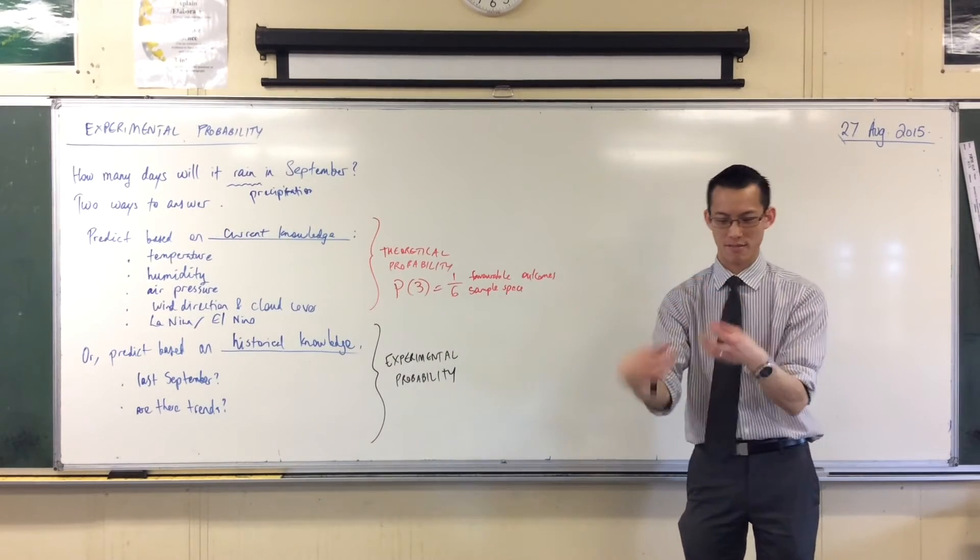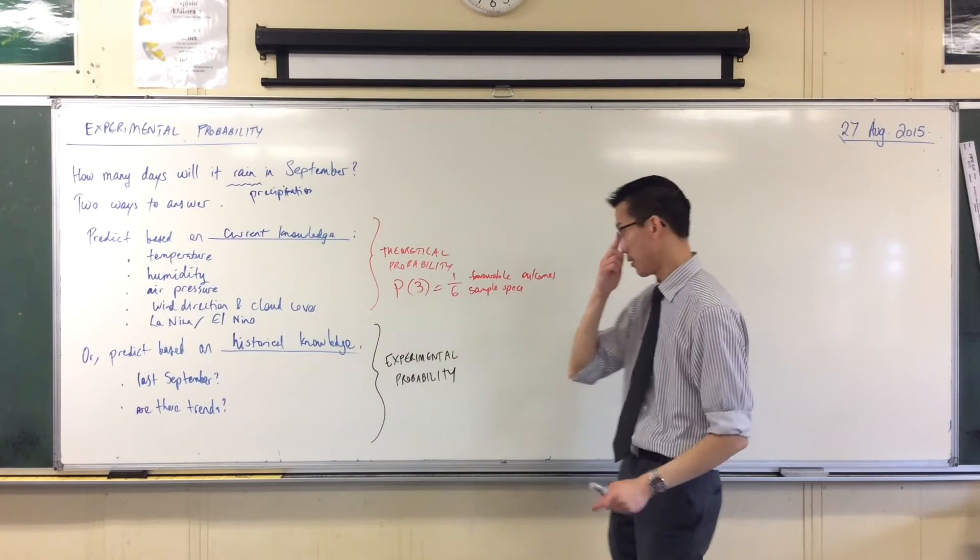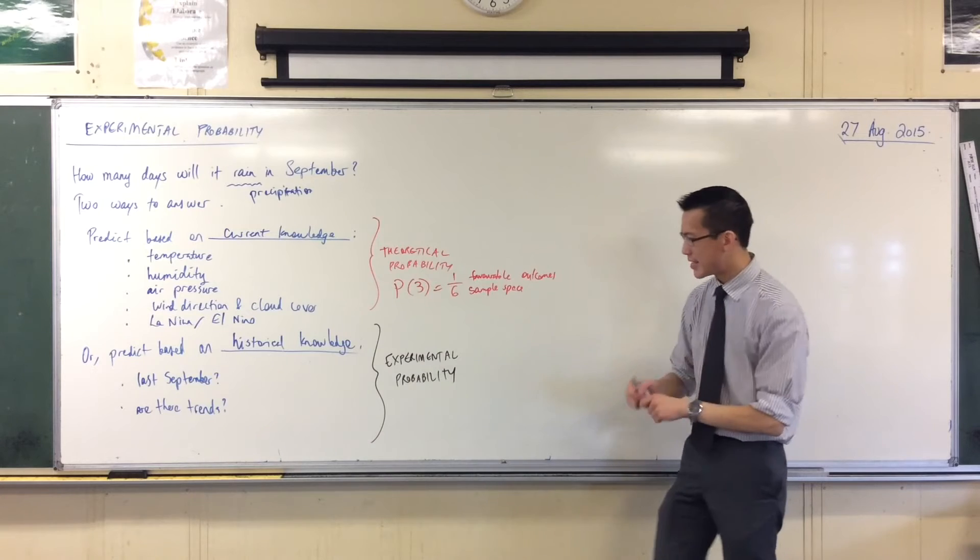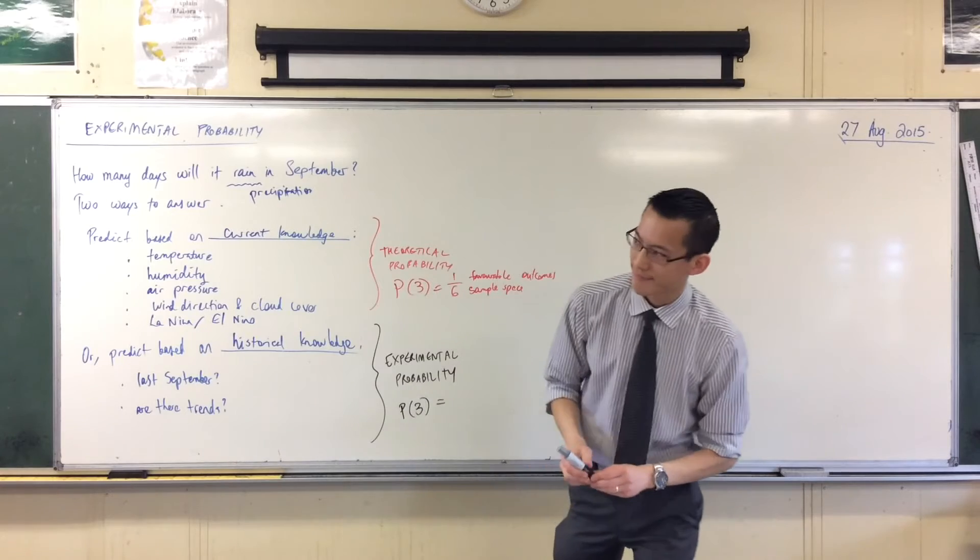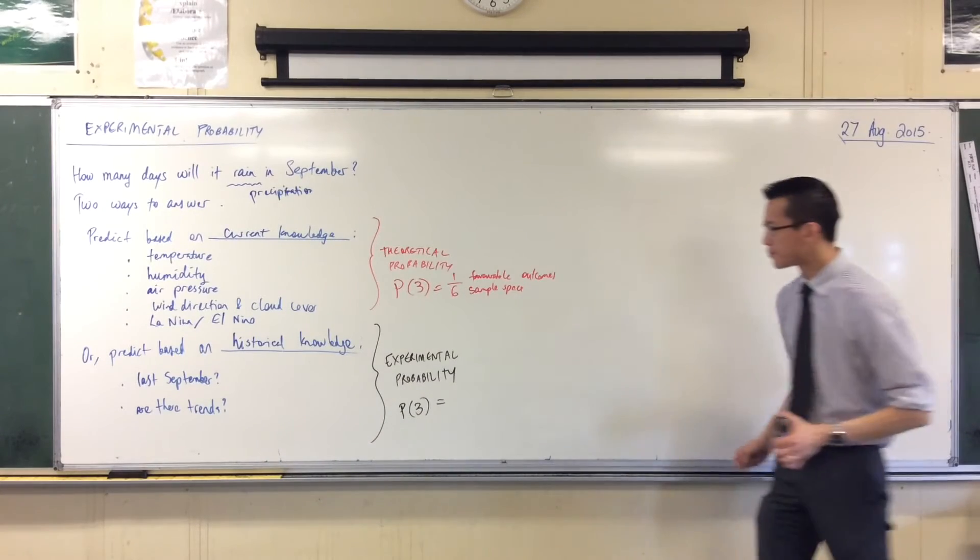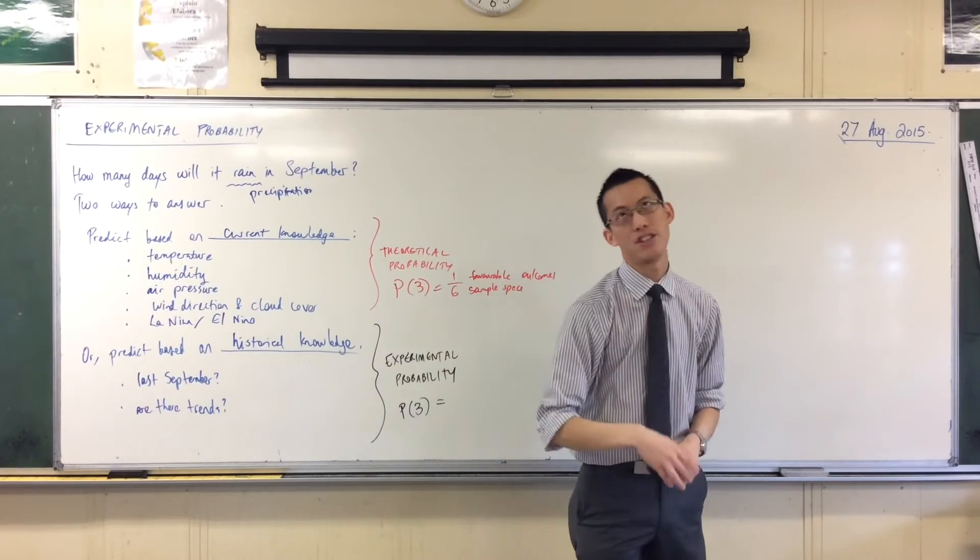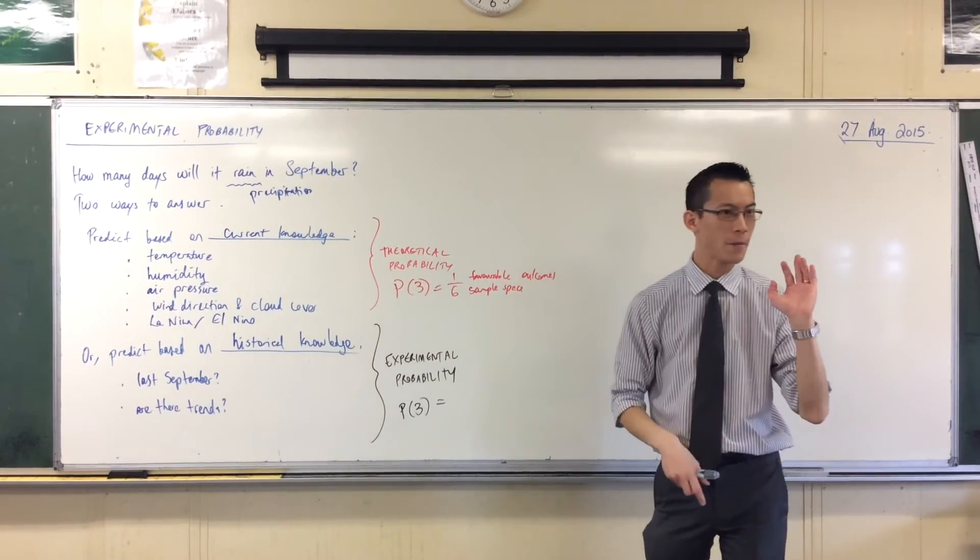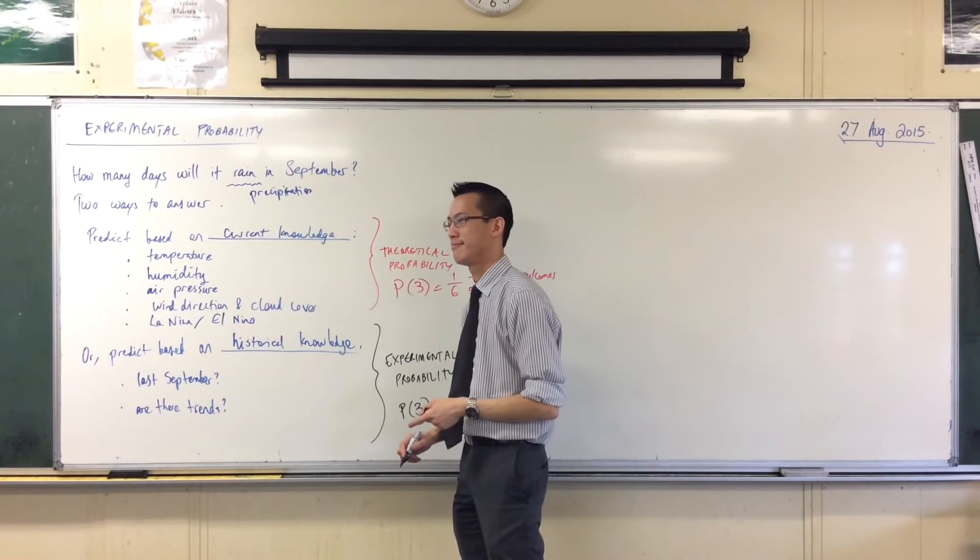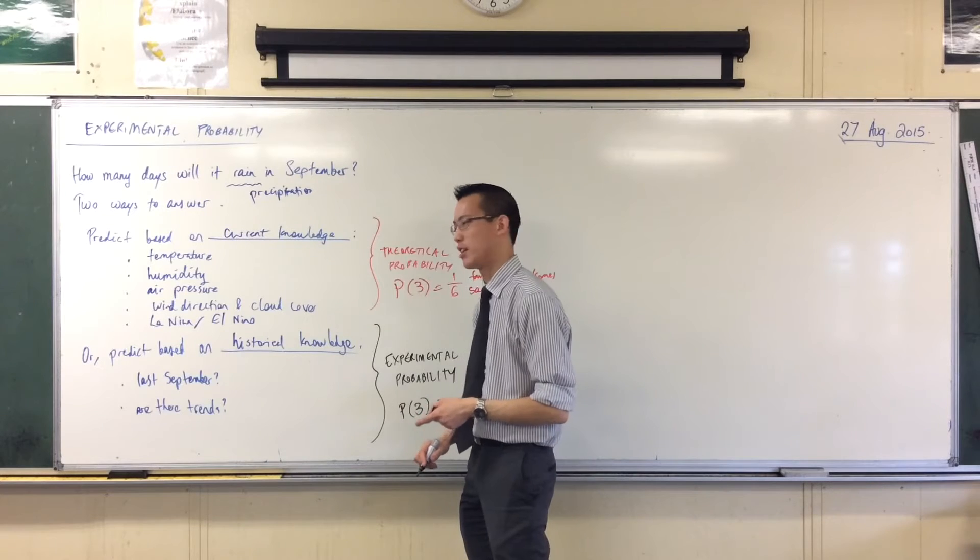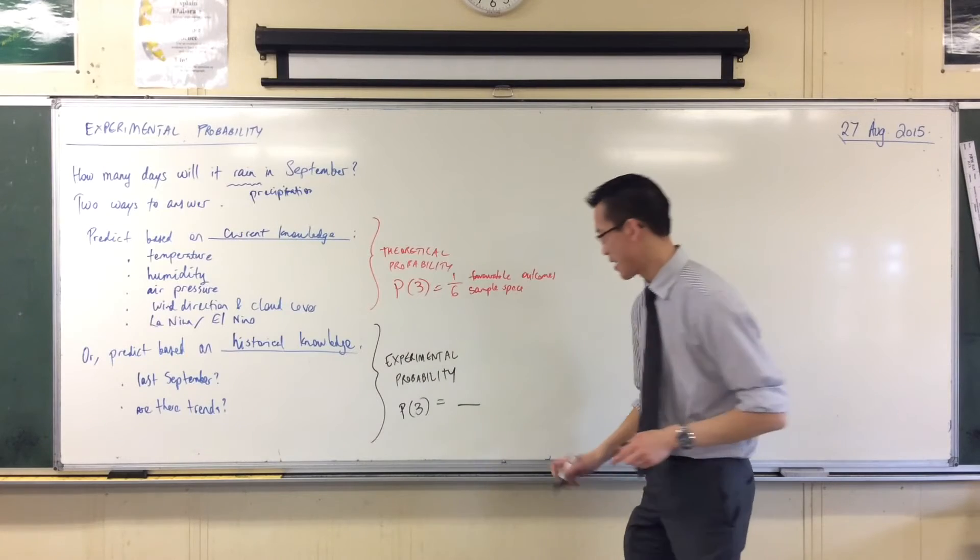So what we might do instead is say, look, the probability of a three—suppose I roll 60 times. Out of 60, how many would you normally expect in theory would be three?